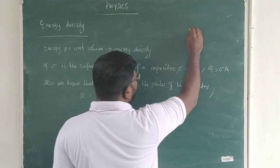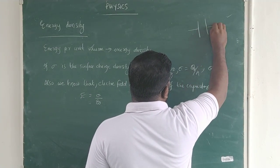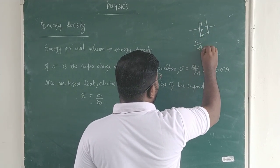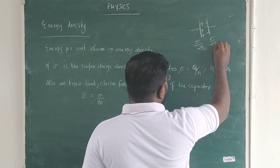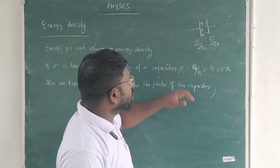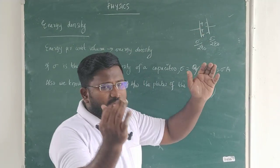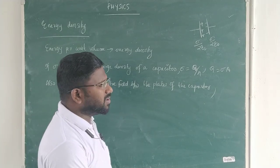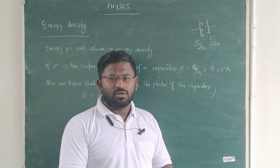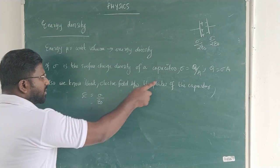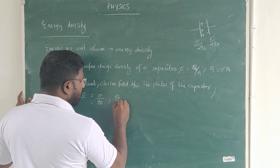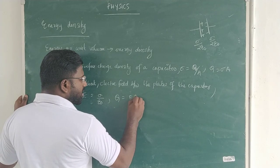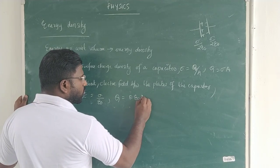Each plate contributes sigma by 2 epsilon zero, so the total electric field E equals sigma by 2 epsilon zero plus sigma by 2 epsilon zero, which gives sigma by epsilon zero. From this, the charge Q becomes sigma times epsilon zero times A.